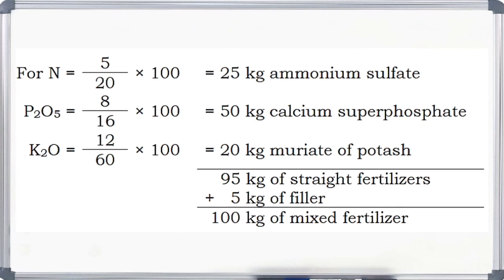For nitrogen: 5 divided by 20 times 100. The result is 25 kg of ammonium sulfate. For phosphorus: 8 divided by 16 times 100, equal to 50 kg of calcium super phosphate. For potassium: 12 divided by 60 times 100, equal to 20 kg of muriate of potash. The total is 95 kg of straight fertilizer. We will need 5 kg of filler to make it 100 kg of mixed fertilizer.